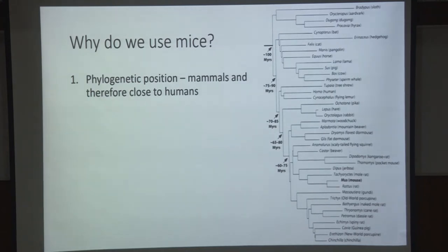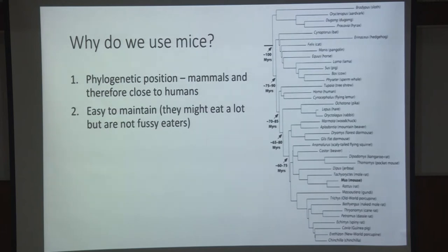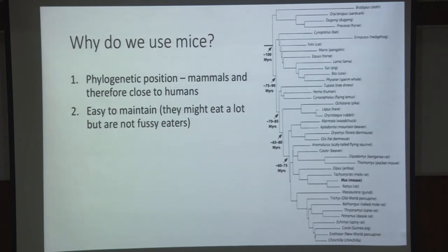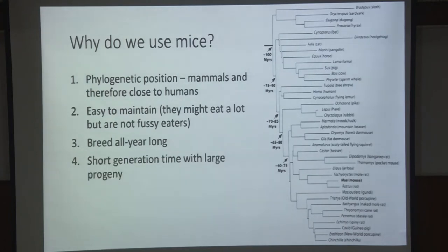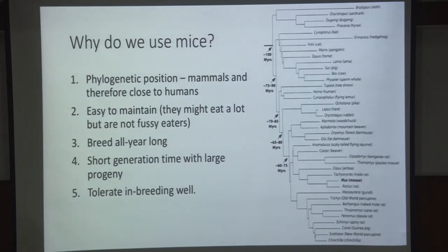So why do we use mice? Phylogenetic position — mice are mammals and therefore close to humans. While they may be expensive to house, they're easy to maintain; they're rodents, they eat a lot but they're not fussy. They breed all year long — they're not seasonal. And they have a short generation time with a large progeny, not as large as zebrafish but slightly larger than chickens — some strains yield up to about 8 or 10 pups. And they tolerate inbreeding well.